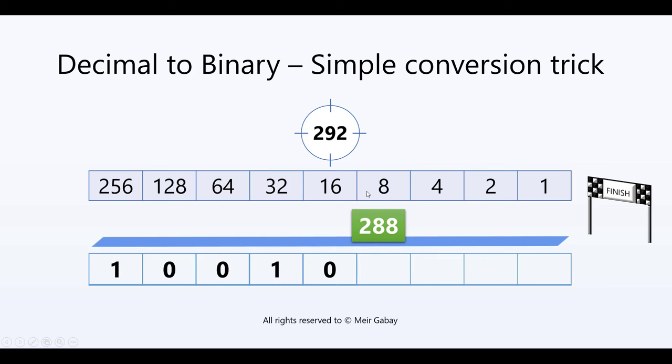Going to 8. Same goes here. 288 plus 8 does not fit in 292, so we put a 0.